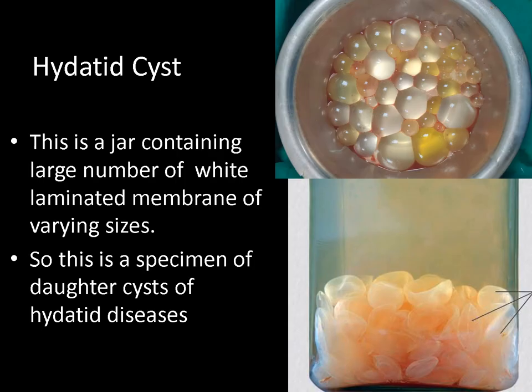The next specimen contains a large number of daughter cysts. The mounted specimen in the jar contains a large number of white laminated membranes of varying sizes. And hence I call this specimen as the daughter cysts of hydatid cysts.